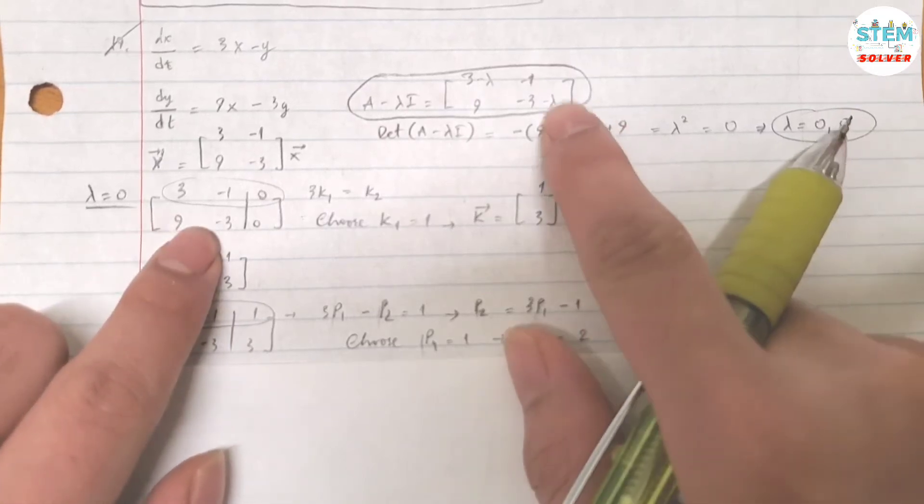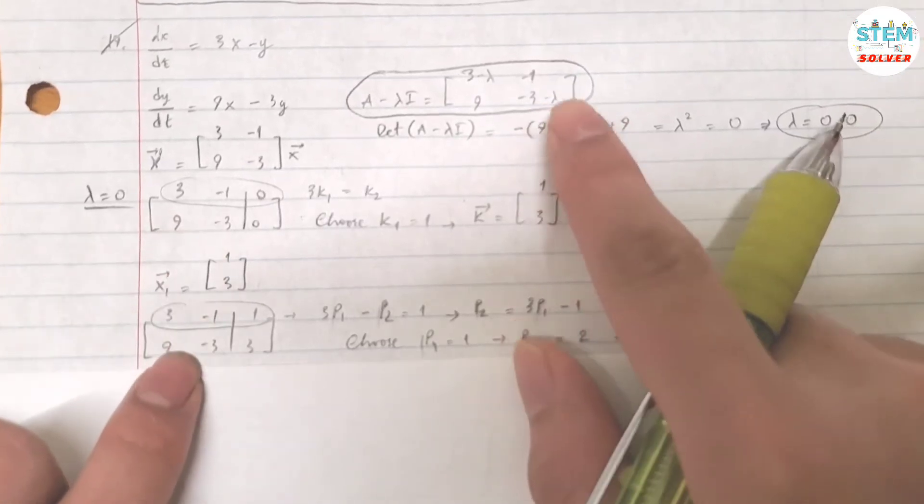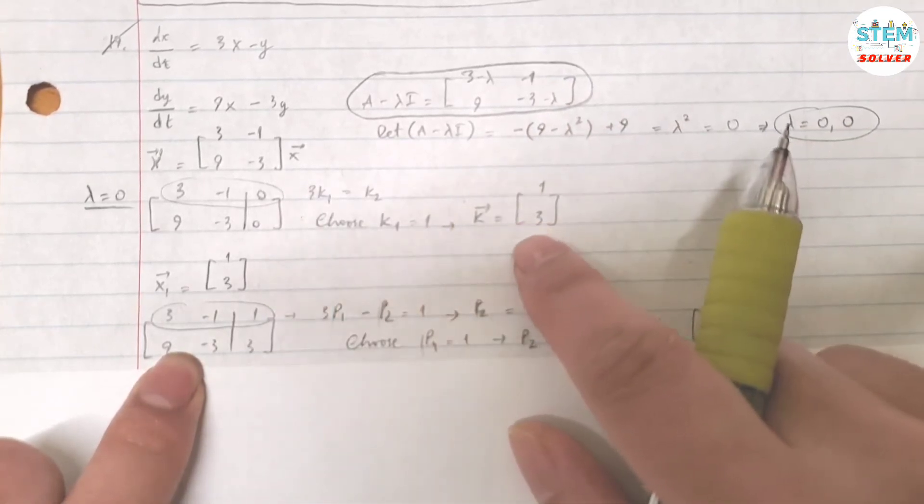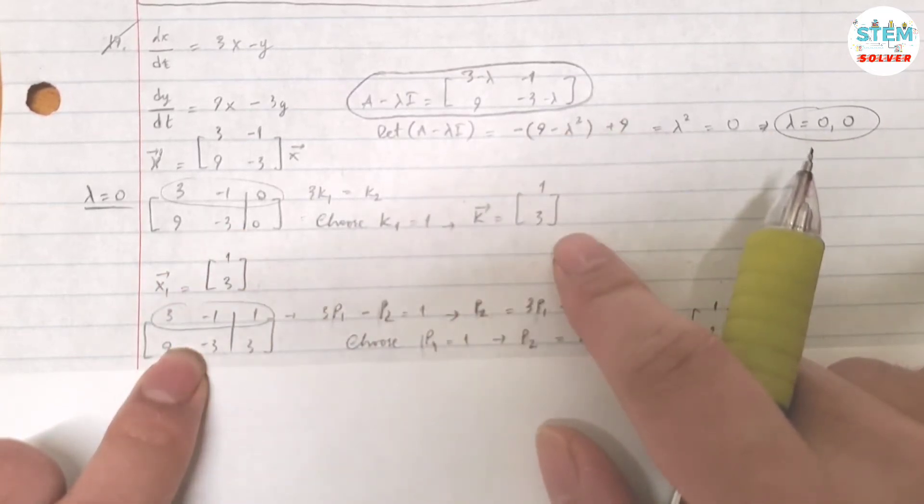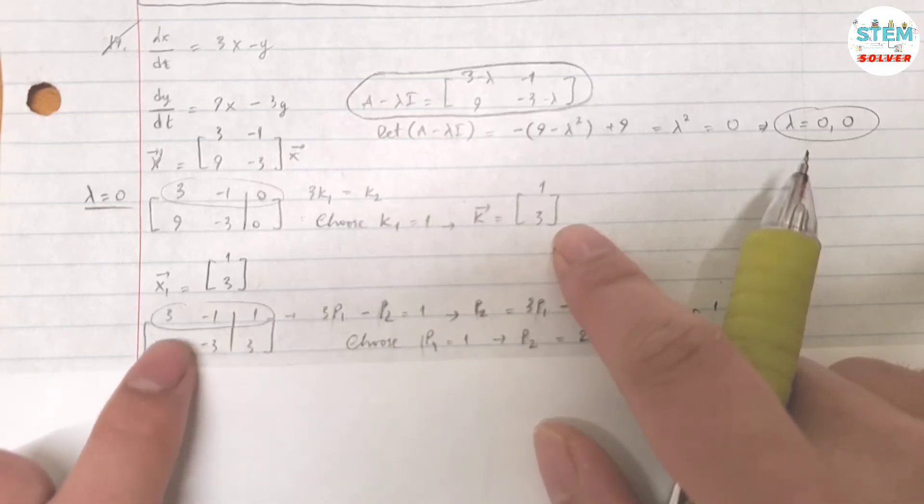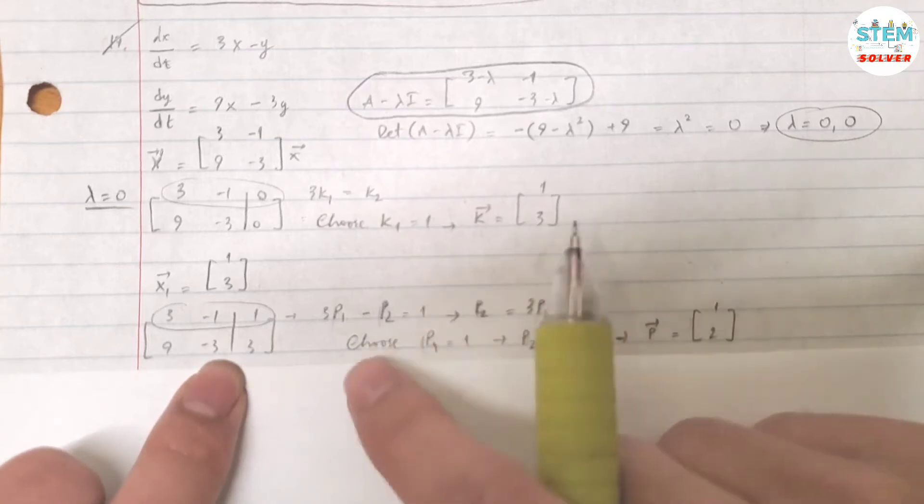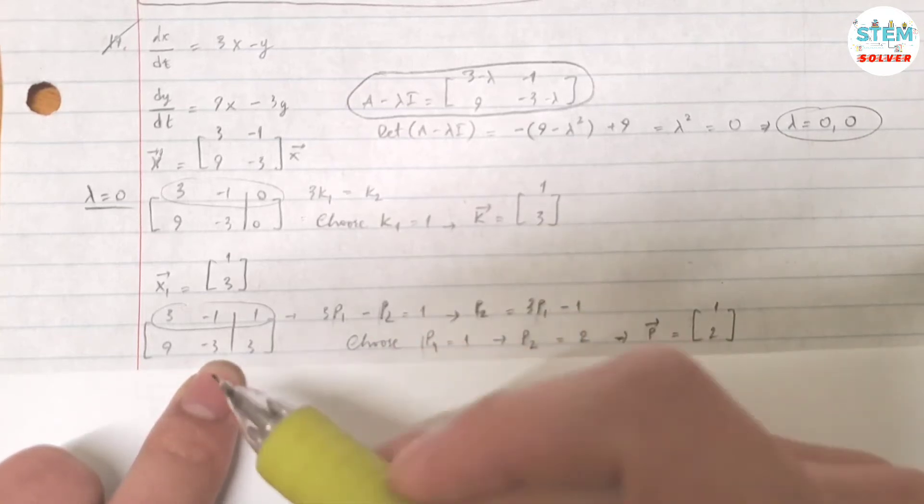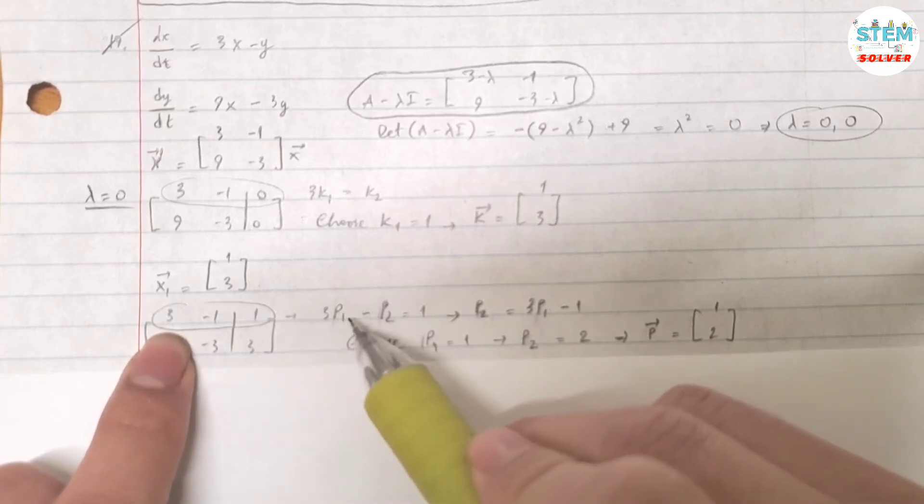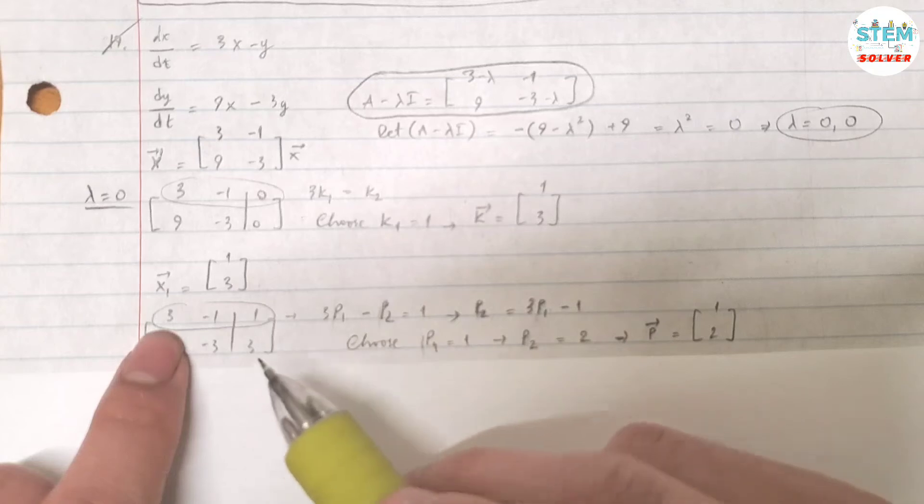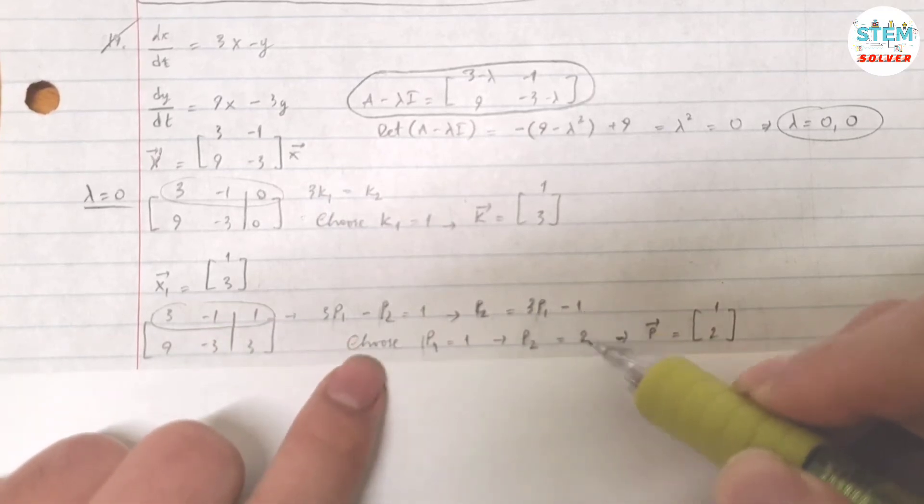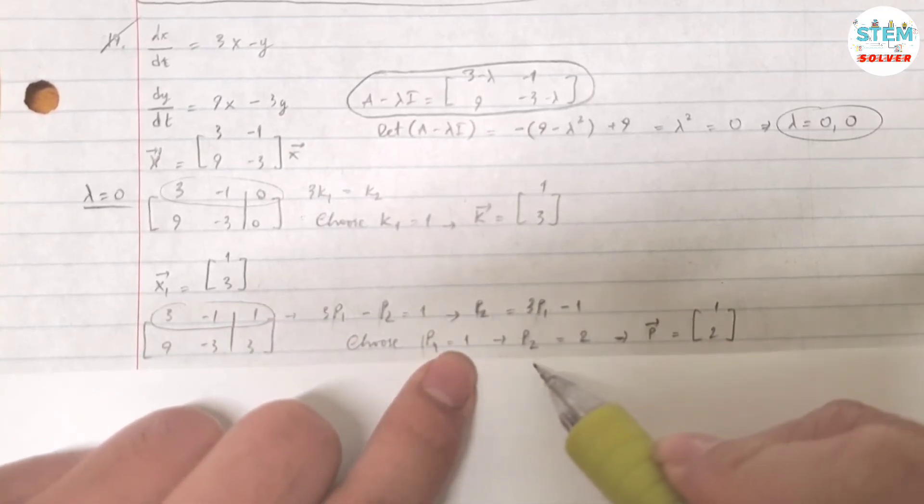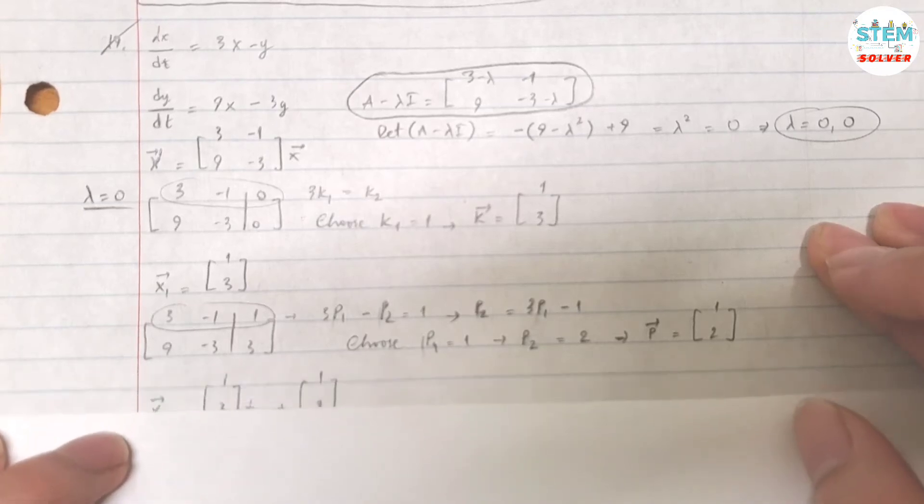If I plug 0 into this matrix, I get this augmented with 0, and that gave vector K [1, 3]. Now augment the same matrix with the vector you just found [1, 3], and solve for the unknowns. Let's call this variable P. So 3P1 minus P2 equals 1. Solving for P2, I get 3P1 minus 1. If I choose P1 equals 1, then P2 is 2, and vector P is [1, 2].